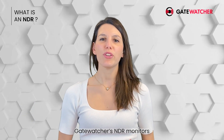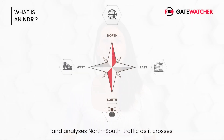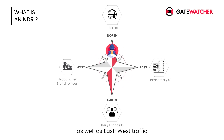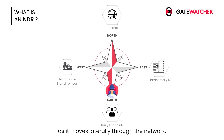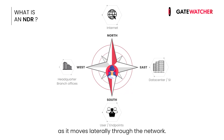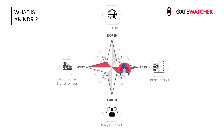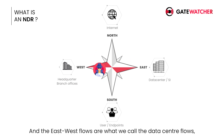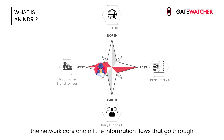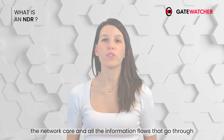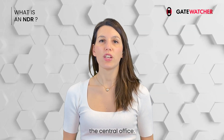Gatewatcher's NDR monitors and analyzes North-South traffic as it crosses the perimeter, as well as East-West traffic as it moves laterally through the network. The North-South flows are what we call Internet access, and the East-West flows are what we call the data center flows — the network core and all the information flows that go through the central office.